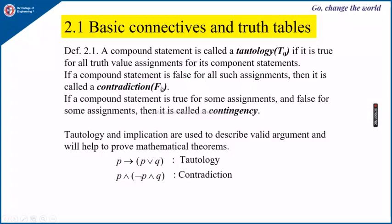Tautology and implications are used to describe valid arguments and will help to prove mathematical theorems. An example of a tautology is: P implies (if P then Q) or P. Here you will not get a condition where the left-hand side is true and the right-hand side is false. So for all values of P and Q, this compound statement will be true.